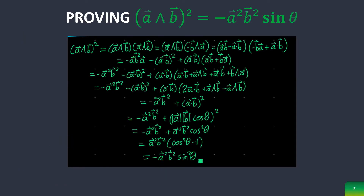Another thing is proving that the square of a bivector is negative in value. While this isn't necessarily a complex proof, I have to mention that when I first worked through it, I forgot to write down this negative sign, so I got a positive sign and thought something was wrong. But anyway, this should be a pretty straightforward proof.